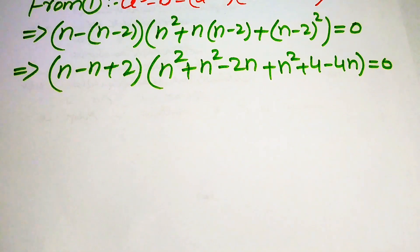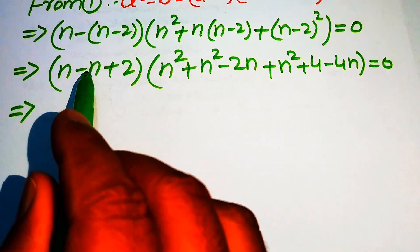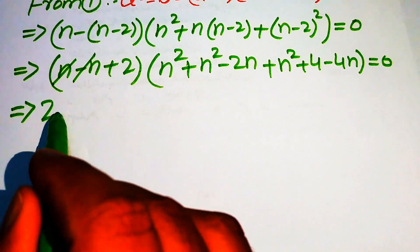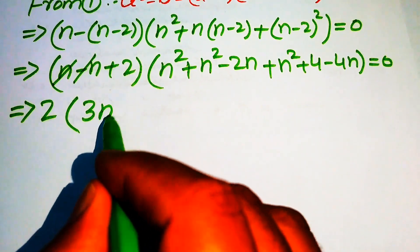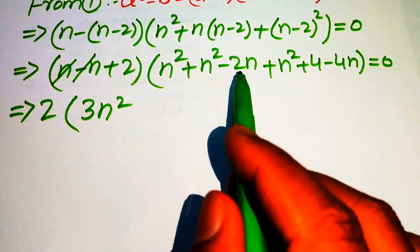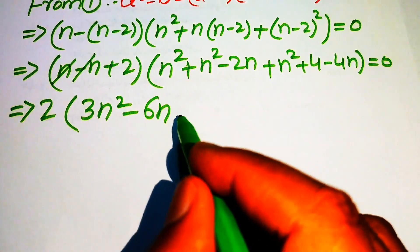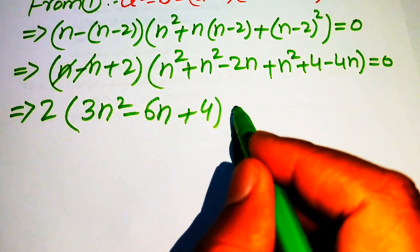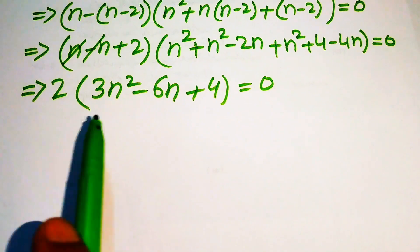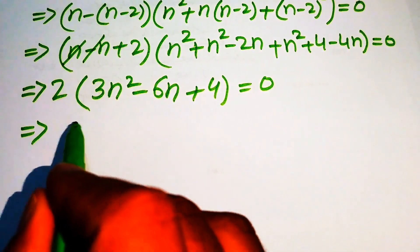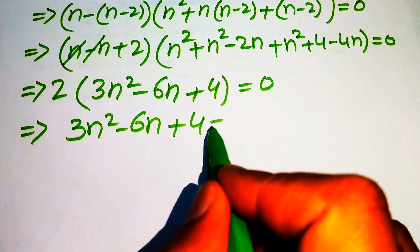After simplification, the positive and negative n squared terms combine. We get 3 times n squared from the three n squared terms, minus 2n minus 4n gives minus 6n, and plus 4 equals to 0. Moving the 2 to the right hand side, we arrive at 3n squared minus 6n plus 4 equals to 0.